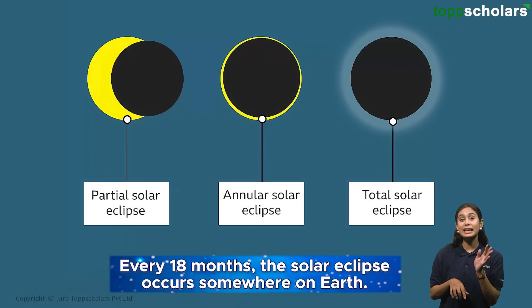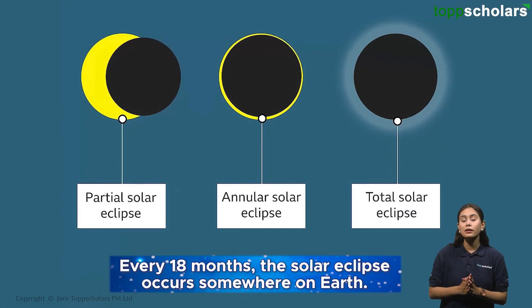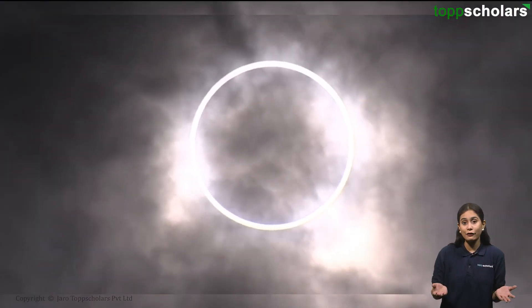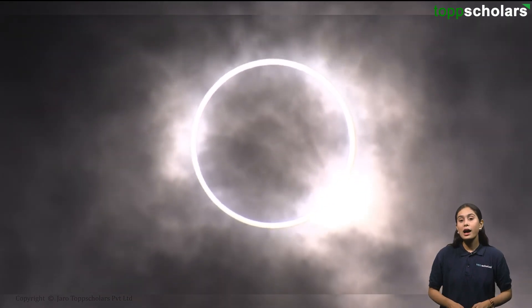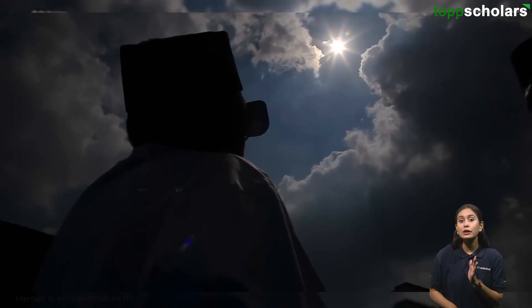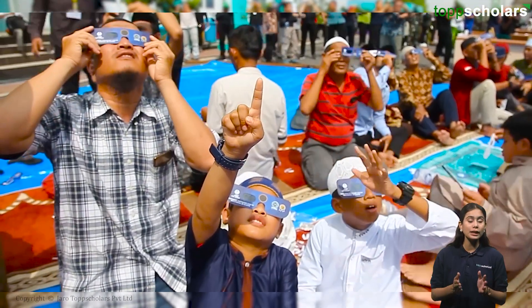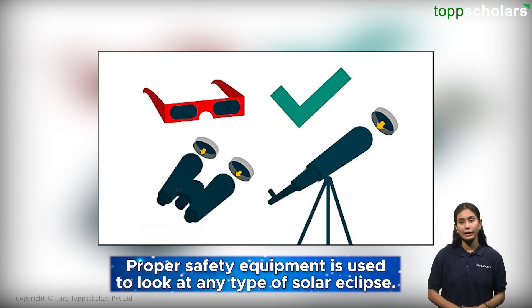A solar eclipse occurs somewhere on Earth every 18 months. They last only a few minutes, which is why people get very excited to watch them. However, you should never look directly at the Sun as it can permanently damage your eyes. Proper safety equipment must be used to view any type of solar eclipse.